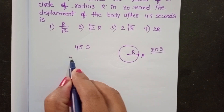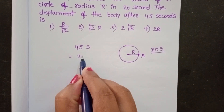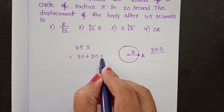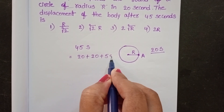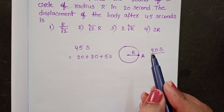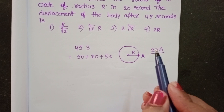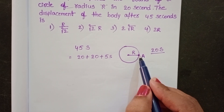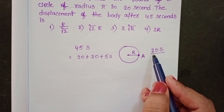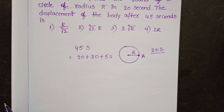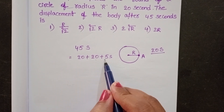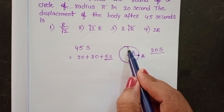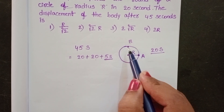In 45 seconds, the body completes 2 revolutions completely, with 5 seconds remaining. After completion of the 2 revolutions, the initial and final position of the body is the same, so displacement is equal to 0. Within the remaining 5 seconds, it moves from A to B.